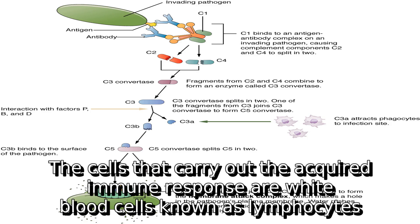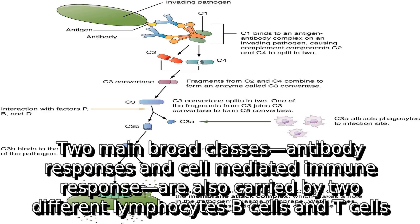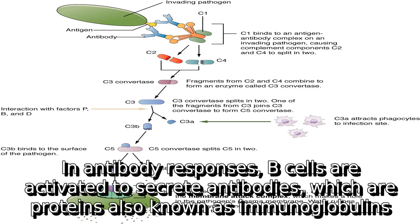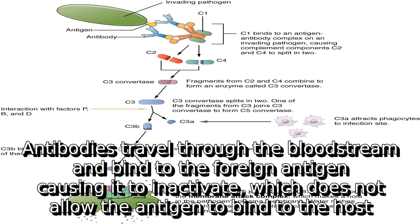The cells that carry out the acquired immune response are white blood cells known as lymphocytes. Two main broad classes — antibody responses and cell-mediated immune response — are carried out by two different lymphocytes, B cells and T cells. In antibody responses, B cells are activated to secrete antibodies, which are proteins also known as immunoglobulins. Antibodies travel through the bloodstream and bind to the foreign antigen, causing it to inactivate, which does not allow the antigen to bind to the host.